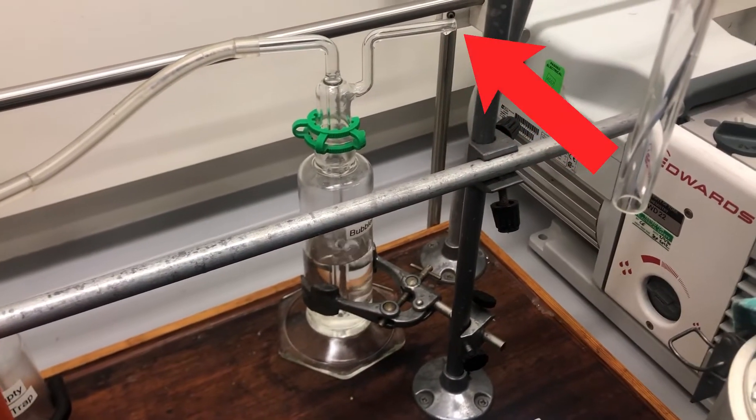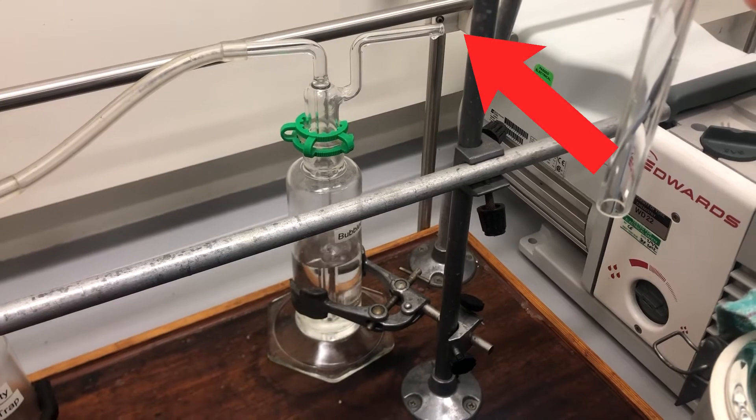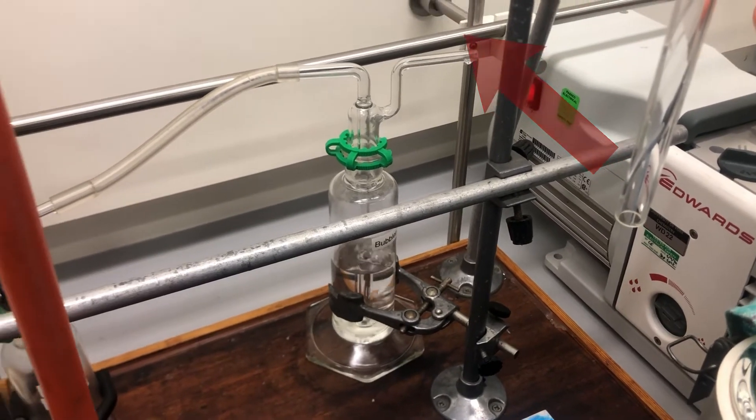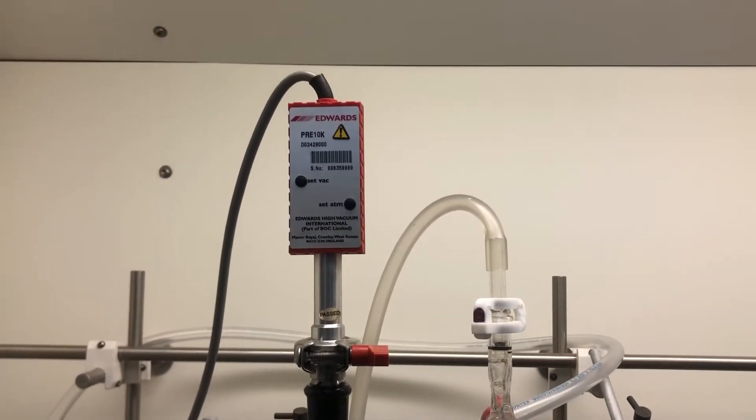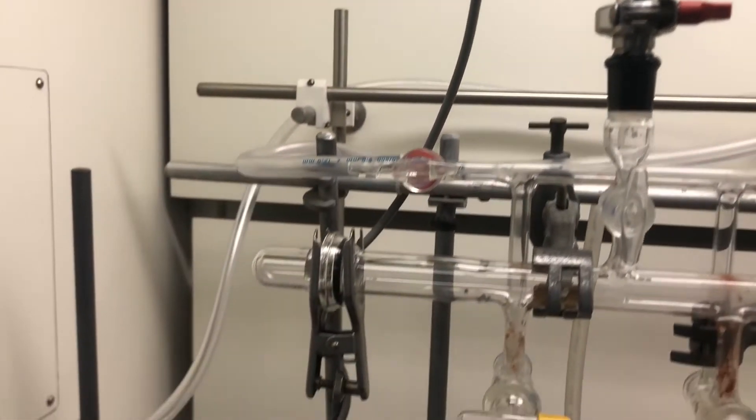That really is like the pressure gauge for our nitrogen manifold. Faster bubbling means higher pressure of nitrogen. We have our vacuum line here as well, which is also attached to a Pirani gauge, which is our pressure gauge.